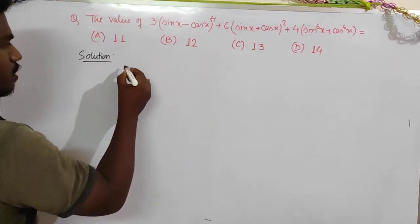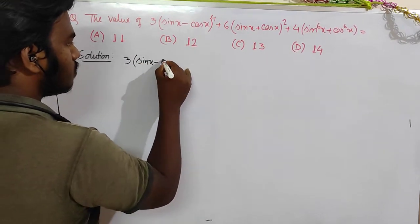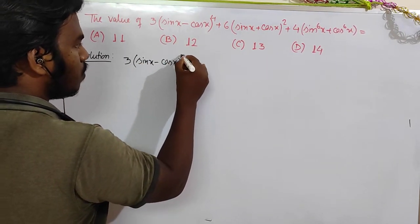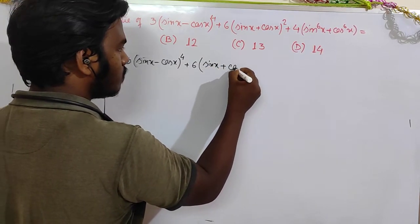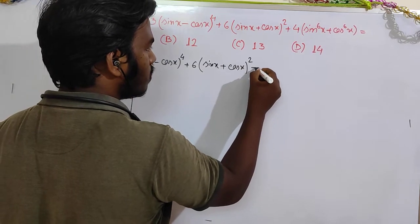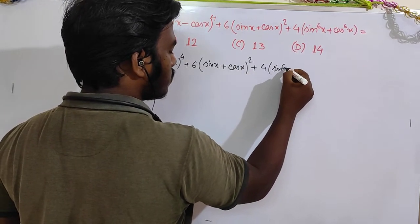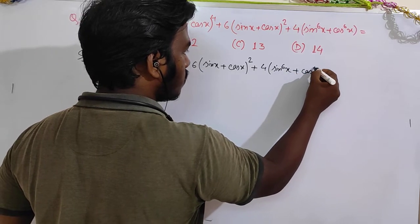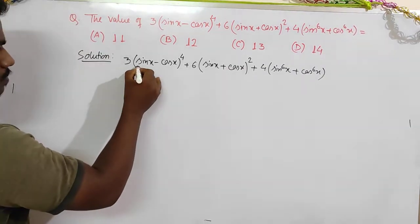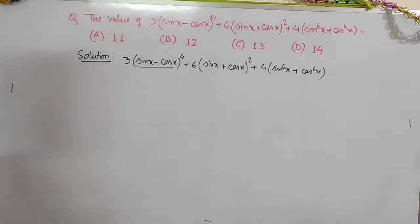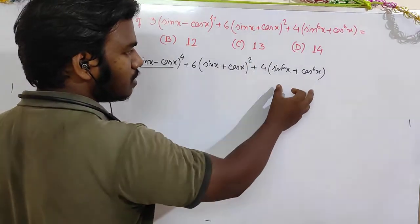So you can see this expression: 3 into sin x minus cos x to the power 4, plus 6 into sin x plus cos x squared, plus 4 into sin to the power 6 x plus cos to the power 6 x.